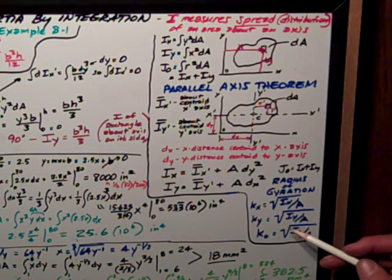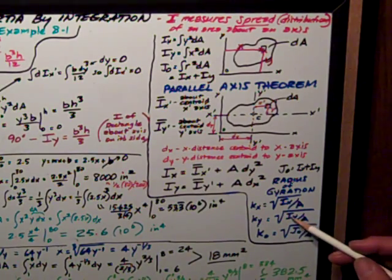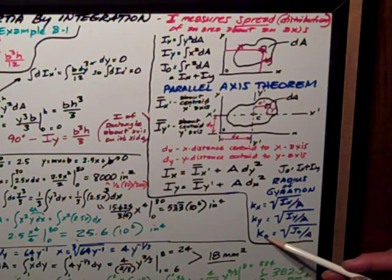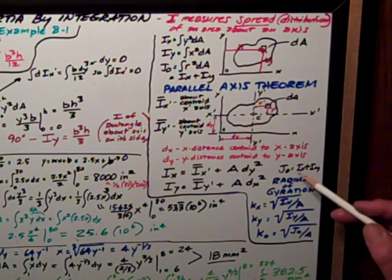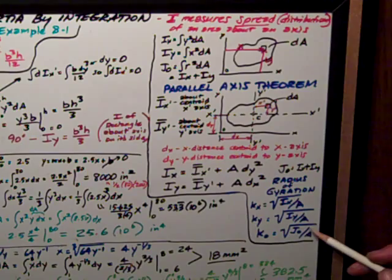ky is the square root of Iy divided by the area, and ko is the square root of Jo, the polar moment of inertia, divided by A.